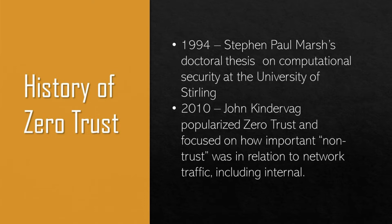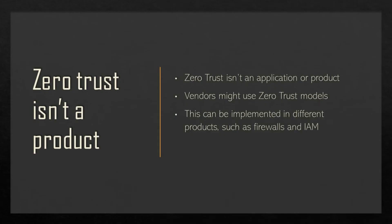This is important because it came from a time where most businesses kept their network and storage in-house without the vulnerabilities of the internet. Zero-trust isn't an appliance that an organization uses from a vendor, but there are vendors who use the model and concept reflected in their products. This model can be implemented in many different ways, such as firewalls and IAM, also known as Identity Access Management.